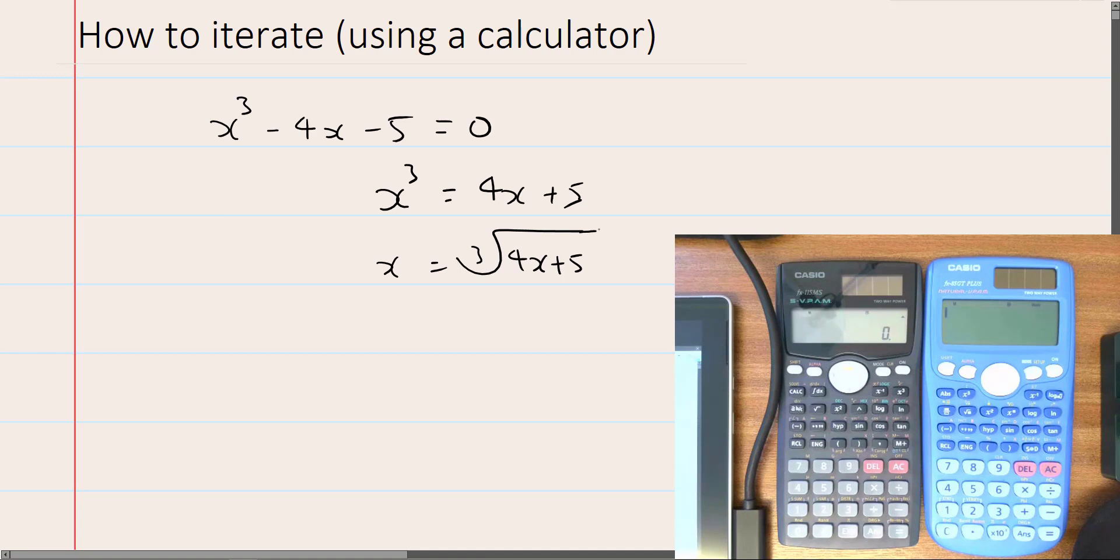So I've got my iteration formula here. To be very proper, I should write this out properly. Let's see, cube root 4xn plus 5.